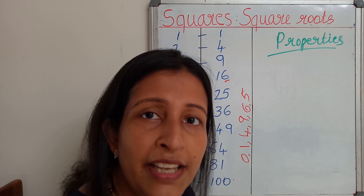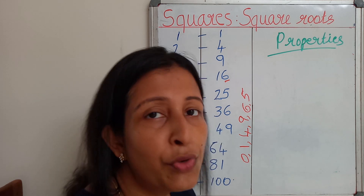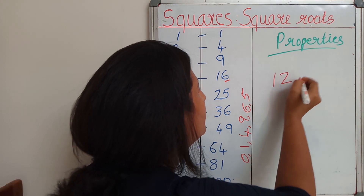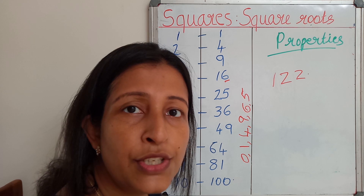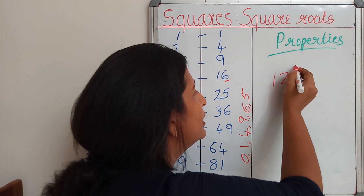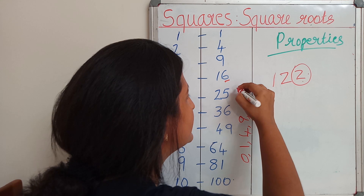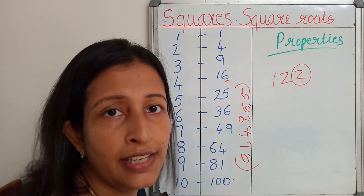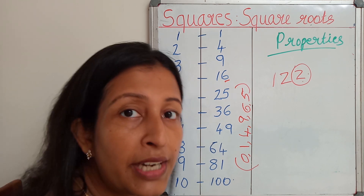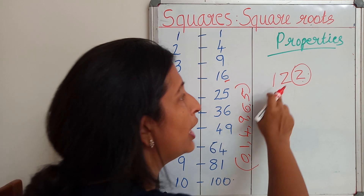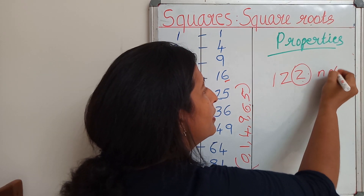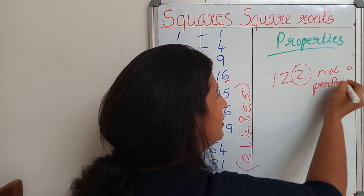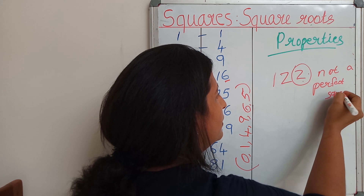What is the importance of studying this property? For your exam, if you are given a number like 122, what is the last digit? It is 2. Does 2 appear in the set {0, 1, 4, 5, 6, 9}? No, 2 is not in that set. So you can definitely say that 122 is not a perfect square.